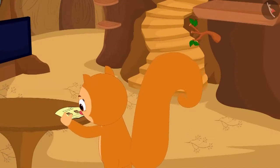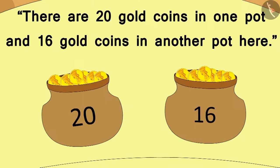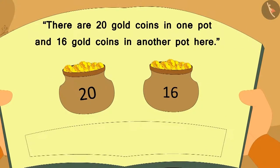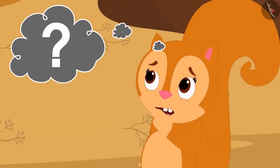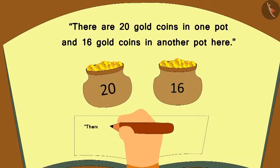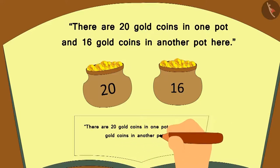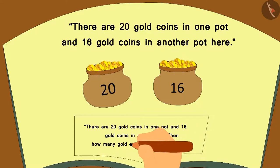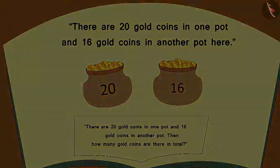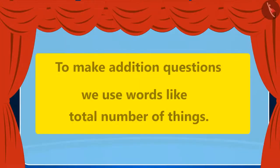This was the first picture in the book. There are 20 gold coins in one pot and 16 gold coins in another pot. There was a blank space below the picture where a question related to the picture was to be written. After thinking for a while, Chanda wrote down a question: There are 20 gold coins in one pot and 16 gold coins in another pot. How many gold coins are there in total? Chanda has now made a question of addition.